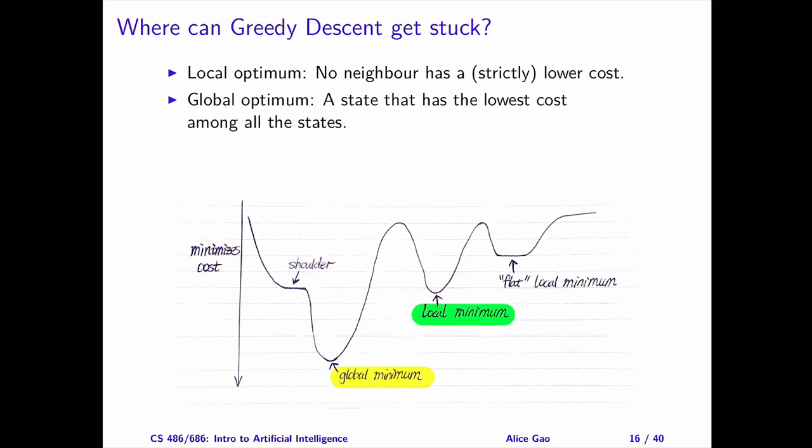The other two local optimals are in a flat neighborhood. The left one has a special name called a shoulder. You can tell that the name comes from its shape, which looks like a person's shoulder. If we're on a shoulder and we explore the neighborhood for long enough, we can escape the shoulder and reach the state with a lower cost. For the other flat local optimum, it's challenging to escape it since the states on both sides have higher costs.